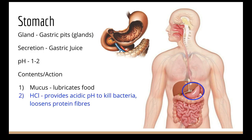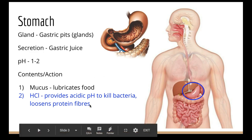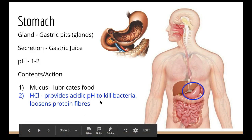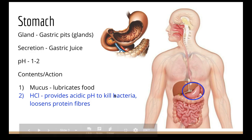Hydrochloric acid is what makes the stomach acid really acidic. It helps loosen the protein fibers — so it does a little bit of physical digestion, not actually chemically breaking down proteins but just loosening them to increase surface area and make it easier for the protein enzyme to get in. It also kills bacteria in our food so it doesn't make us sick.